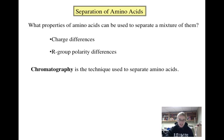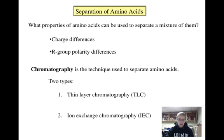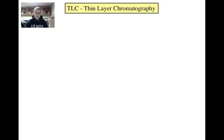Chromatography is the technique used to separate amino acids, and there are two types that we will focus on. One is thin layer chromatography, or TLC, and the other is ion exchange chromatography, or IEC. Thin layer chromatography separates amino acids based on their differences in polarity.